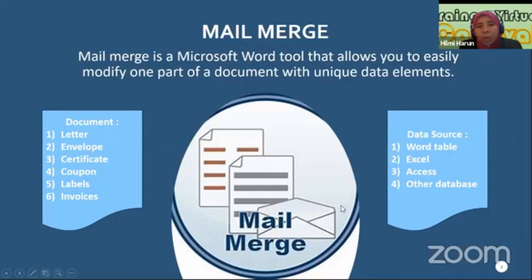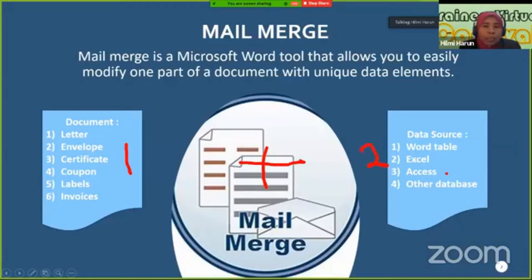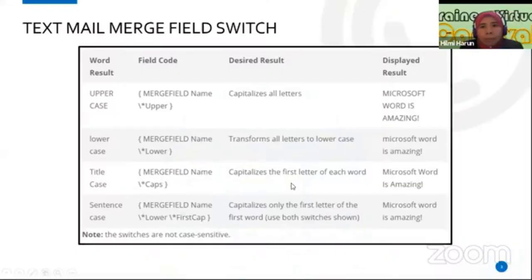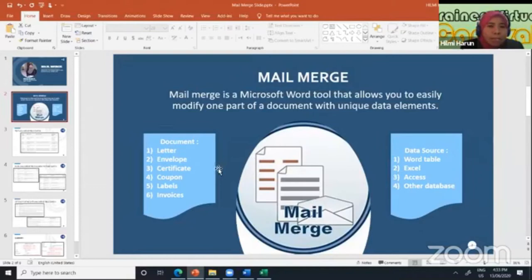How does it work? Basically, Mail Merge will combine your document — that's the first part — and then combine it with your data source. When you combine these two elements, Microsoft Word will generate the document automatically. Let me share my Word document example.